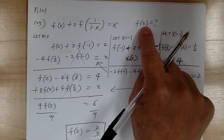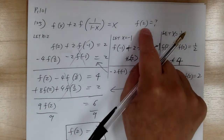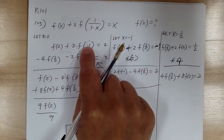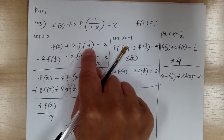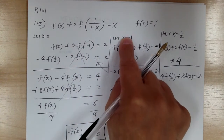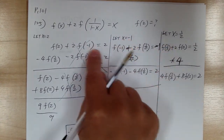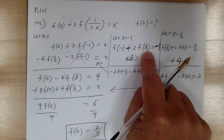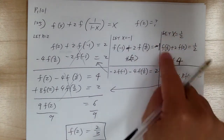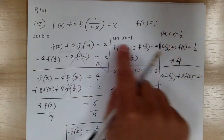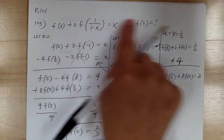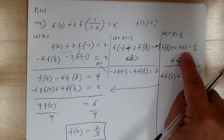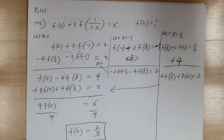So whenever you're looking for f of 2 in this kind of situation, set x equal to 2 and see what you get. Once you do, you notice you have an additional function f of negative 1, so set x equal to negative 1. When you do that, you get an additional function of one half, so set x equal to one half. Most of the time, this process is cyclic — you go in a cycle and it comes back to f of 2.